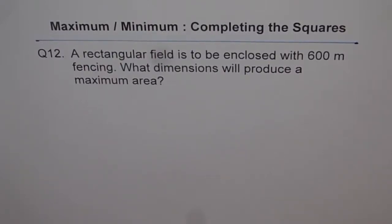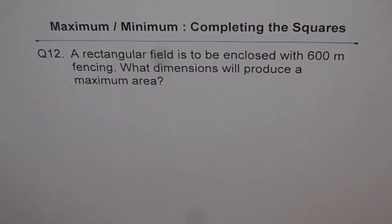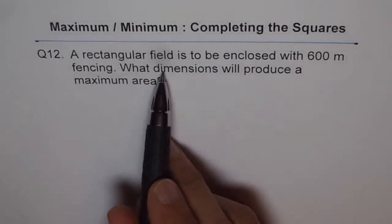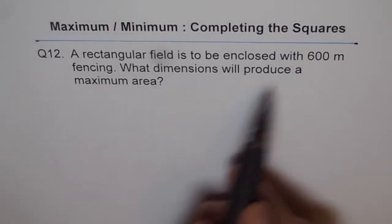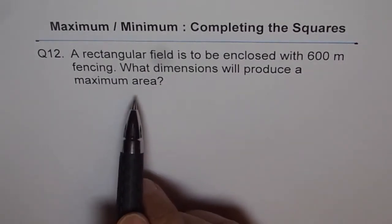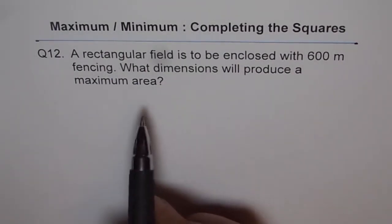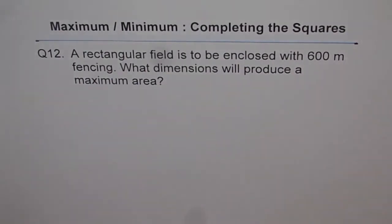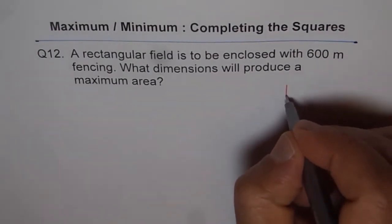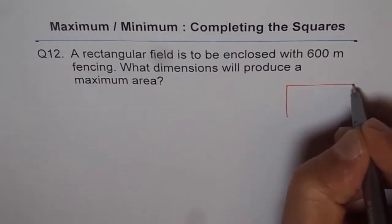Here is a problem involving maximum or minimum, and we will use the completing the squares method to answer this question. Question number 12: a rectangular field is to be enclosed with 600 meter fencing. What dimensions will produce a maximum area? To solve such problems, the first thing is we should make a rough sketch — that's the rectangular field.